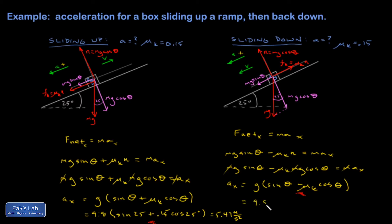So I get 9.8 times the quantity sine theta minus 0.15 cosine theta. And I get 2.81 out of this.